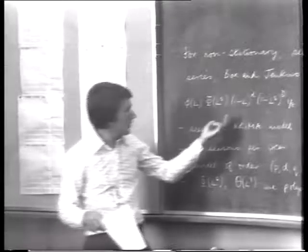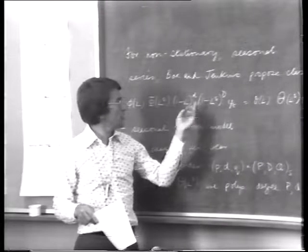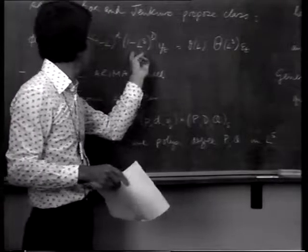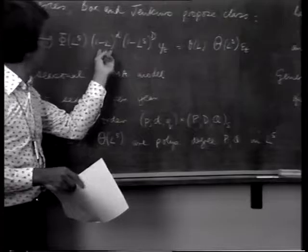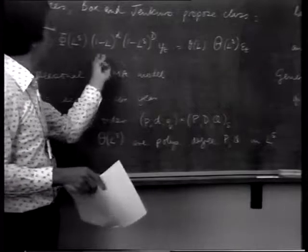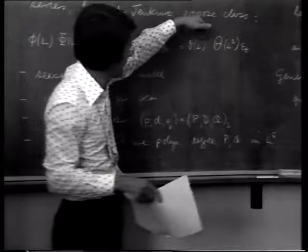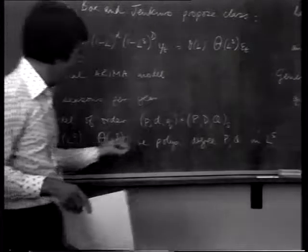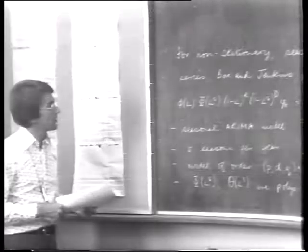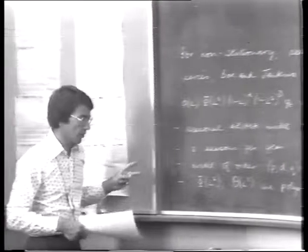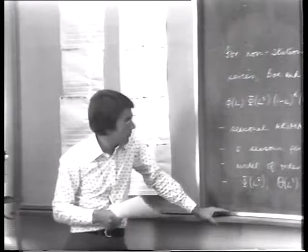In practice, this is a very general class of model, but when estimating models for standard economic time series the number of elements actually required is relatively small. Typically the degree of differencing required is simply one or two. There may be some interaction between non-seasonal and seasonal differencing. Having specified the mixed seasonal autoregressions and moving averages, the orders — small p and q and capital P and Q — for most economic time series tend to be relatively small. This completes the discussion of models in use in univariate analysis.